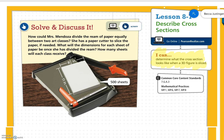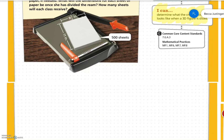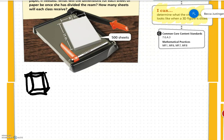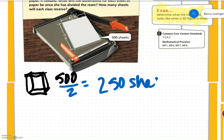Solve and discuss it. How could Mrs. Mendoza divide a ream of paper equally between two art classes? She has a paper cutter to slice the paper if needed. What will the dimensions for each sheet of paper be once she has divided the ream? How many sheets will each class receive? So, we have a rectangular prism — our ream of paper — and she can divide it evenly. With 500 sheets between her two classes, divided by 2, each class gets 250 sheets. And each sheet would be the same: 11 by 8 and a half.